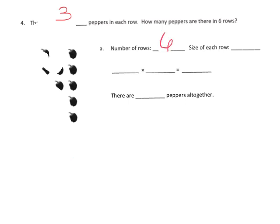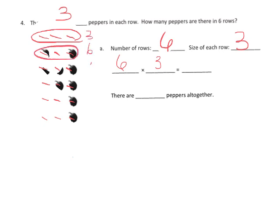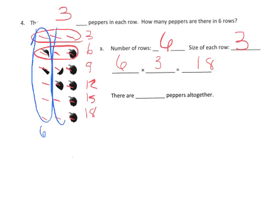There are six rows and three peppers in each row — that's the size of each row. It's customary in the United States to write that as six times three. Kids can count every single pepper, but at this point we want them to start skip counting. They could skip count per row: three, six, nine, twelve, fifteen, eighteen. Or they may skip count by column: six plus six is twelve, plus another six is eighteen. Either way is fine.